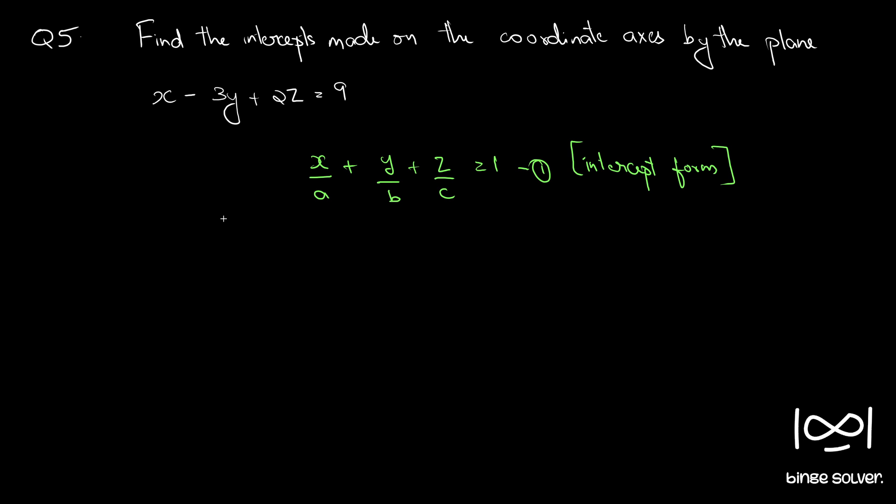Let's call this equation 1. This is the intercept form. To convert a given equation is x minus 3y plus 2z equal to 9. Let this be given.